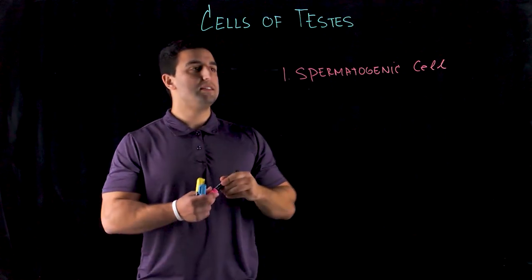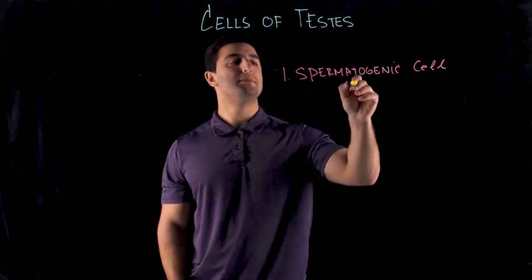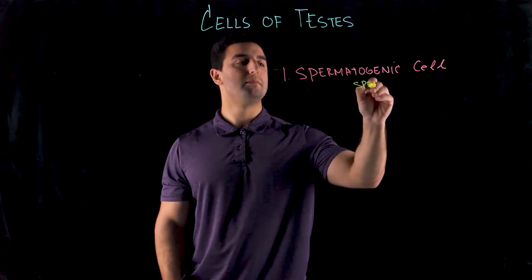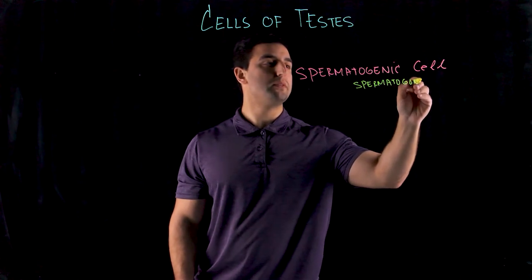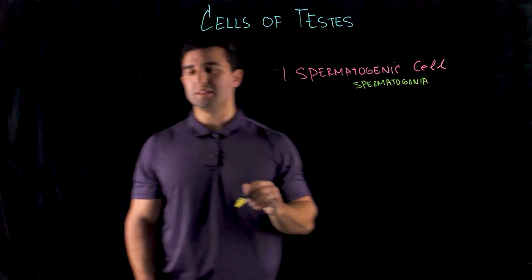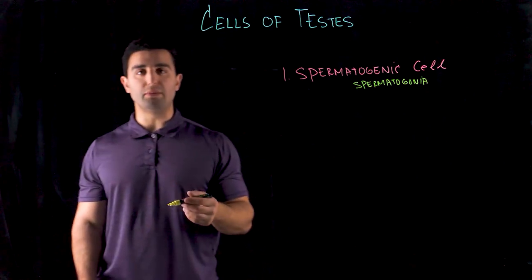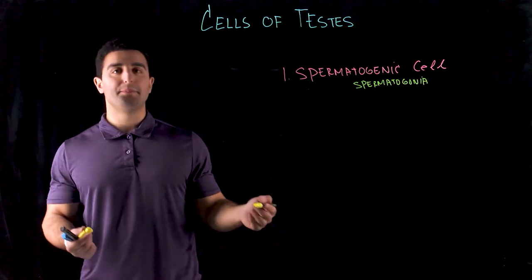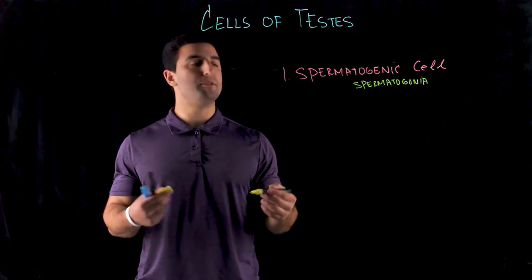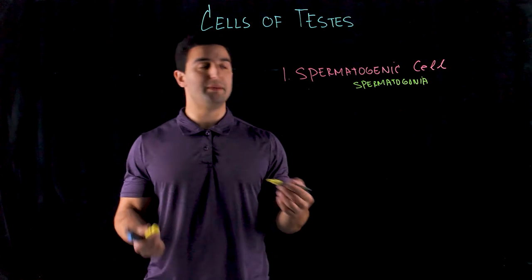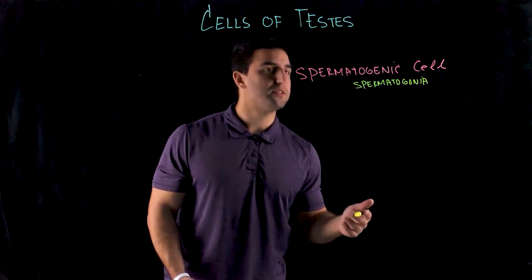The specific cell type involved in this are called spermatogonia. As you can recall, these are the stem cells of the male reproductive system. Spermatogonia give rise to sperm through several instances of symmetric division — one spermatogonium gives you four sperm.